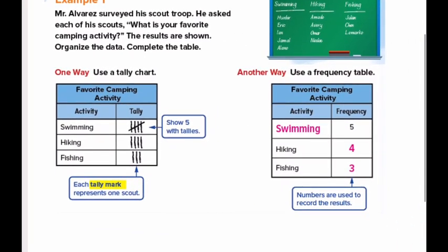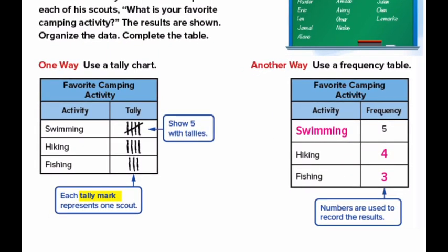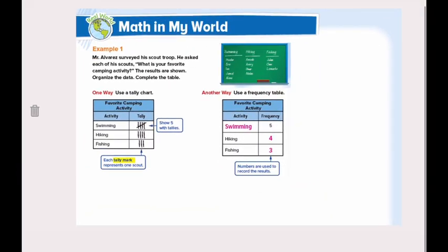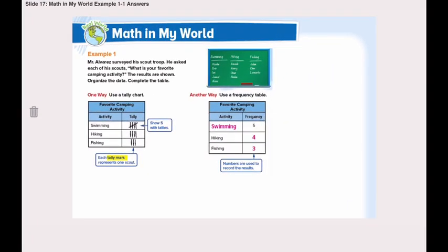Let's take a closer look at both together. The tally chart for swimming has five tally marks, so here we write five in the frequency. For hiking, it has four tally marks, so we write the number four. For fishing, we have three tally marks, so we write number three in the frequency table.